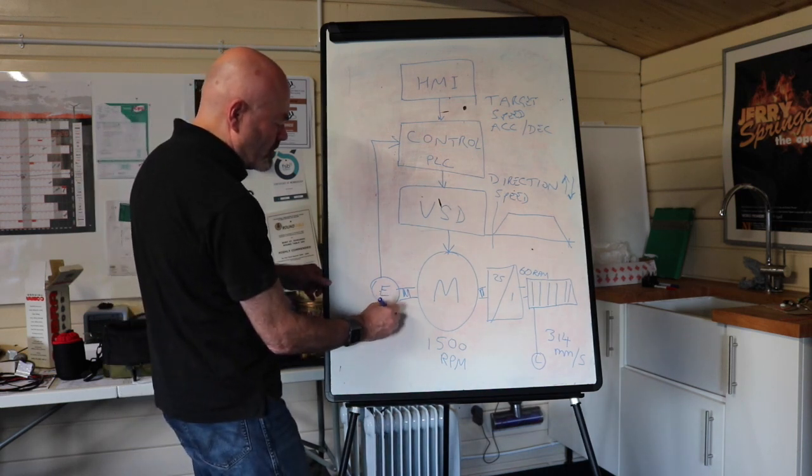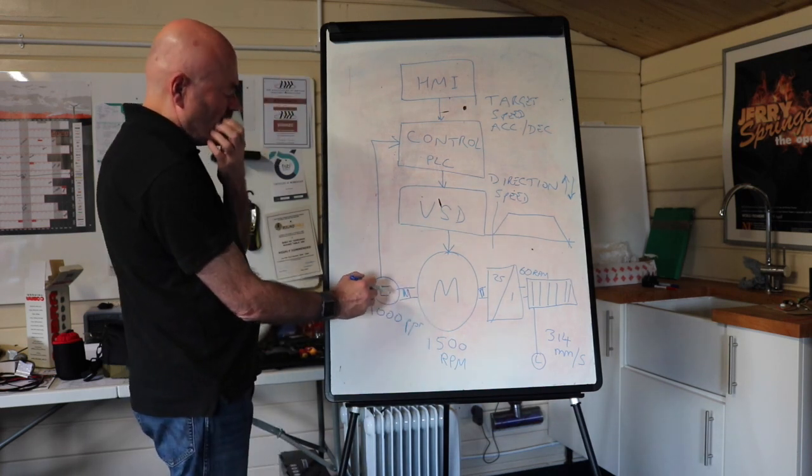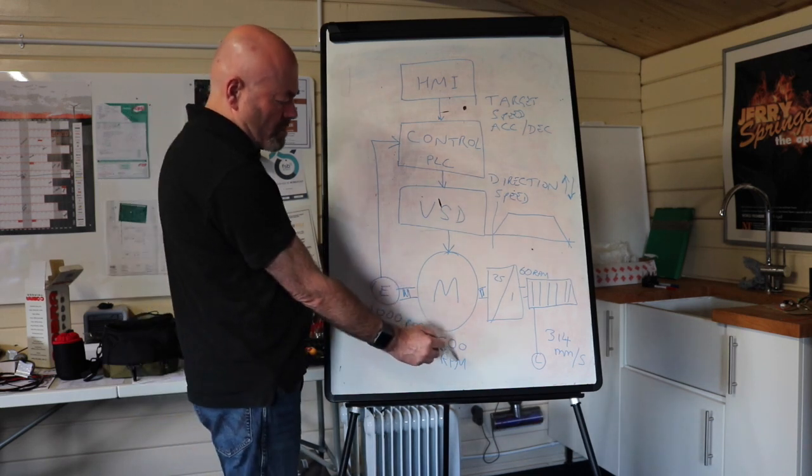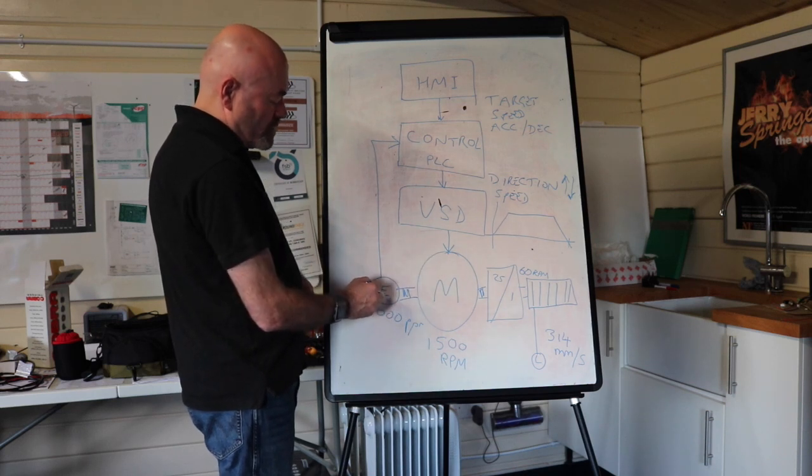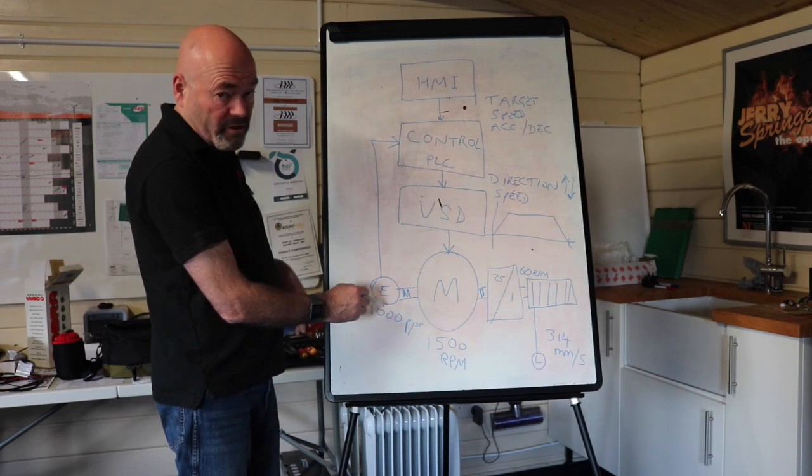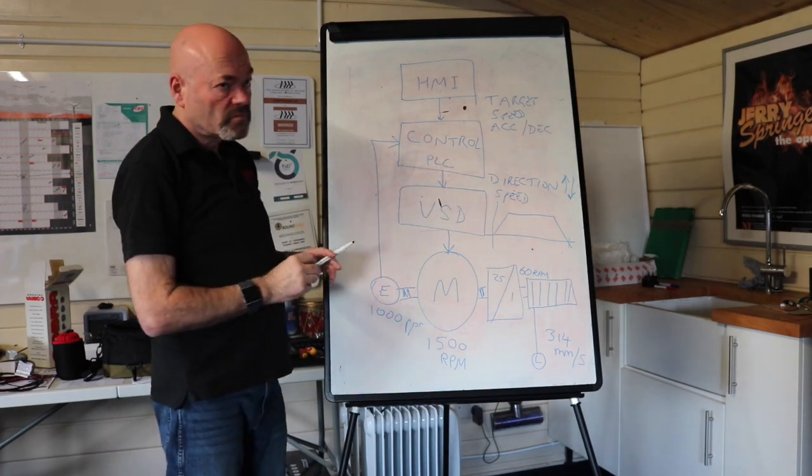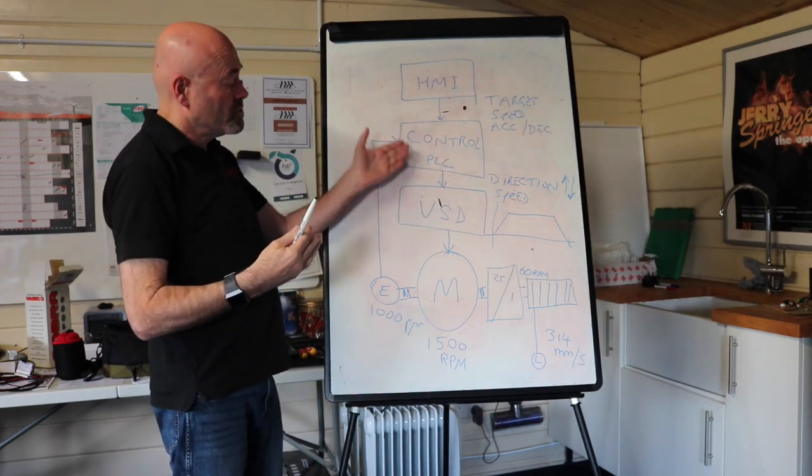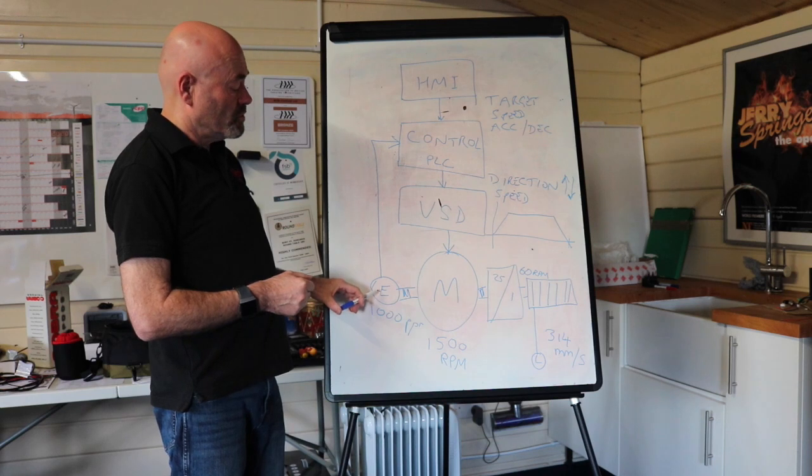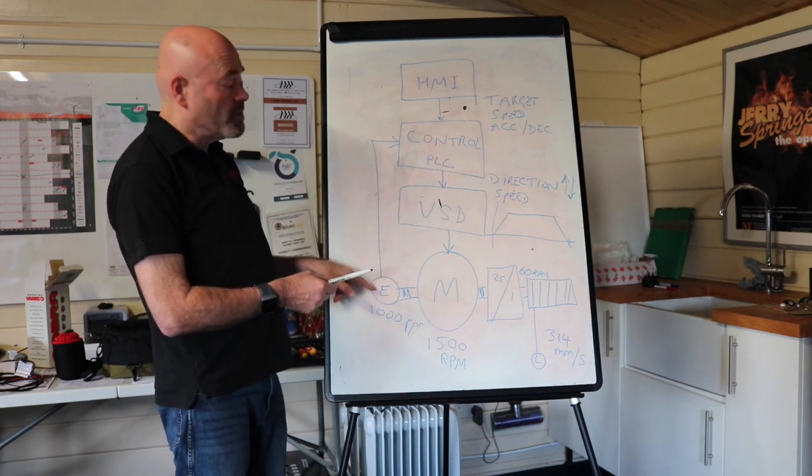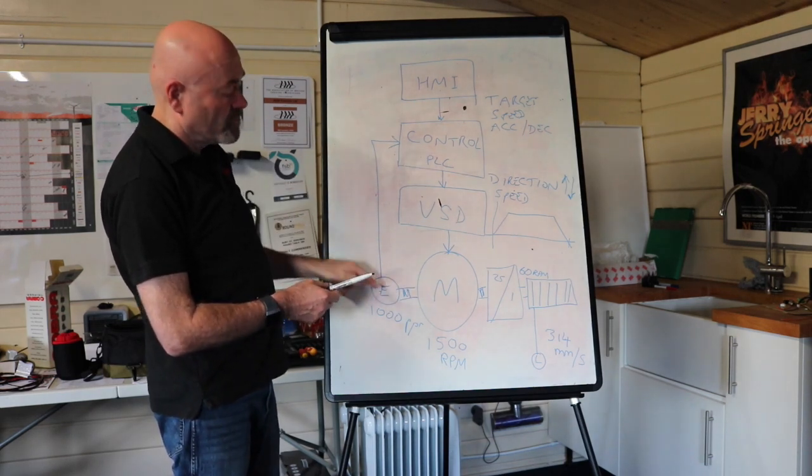So by knowing how many pulses are coming out, it knows how fast the motor is travelling and also can keep up with where the winch is by counting the pulses. So if there were, for instance, a thousand pulses per revolution here, it's a 1500 RPM motor. So this is turning 25 times a second, which means at full speed this encoder is giving 25,000 pulses per second to the control system. So if the control system were asking the motor to go 50%, it's expecting 12,500 pulses back. So by measuring the number of pulses coming back, it knows how fast the system is going. And that is called a closed loop control.